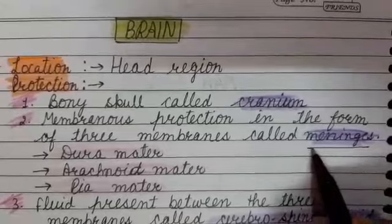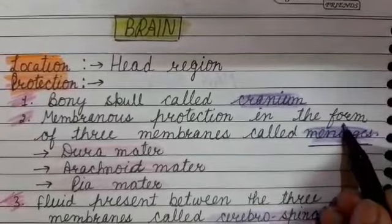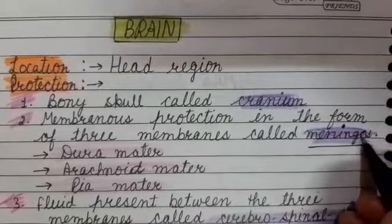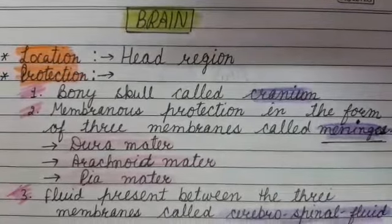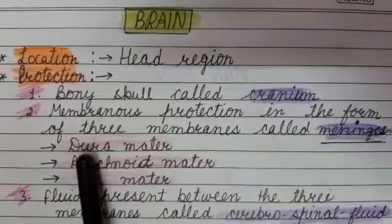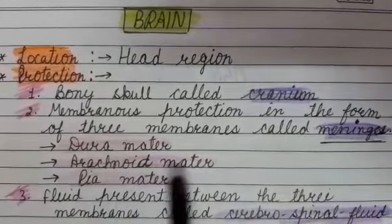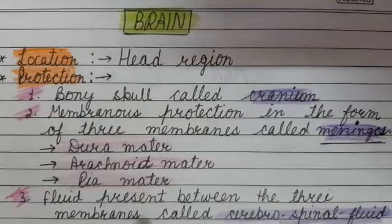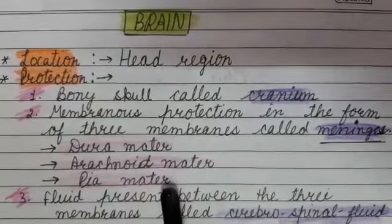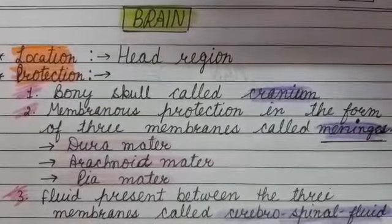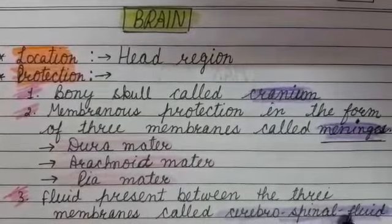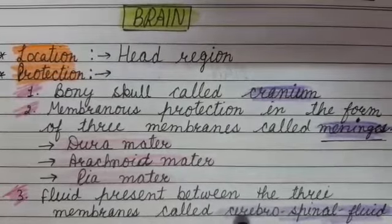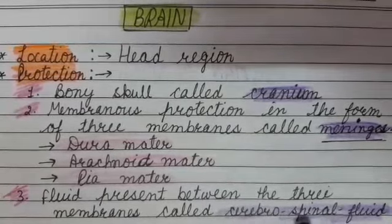Students must remember the word Meninges — it is spelled M-E-N-I-N-G-E-S. The names of these three membranes are Duramater, Arachnoid Mater, and Piamater. In between these three membranes, there is Cerebrospinal Fluid — a fluid present between the three membranes.